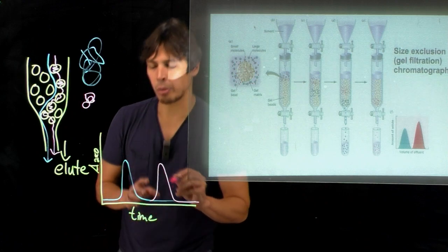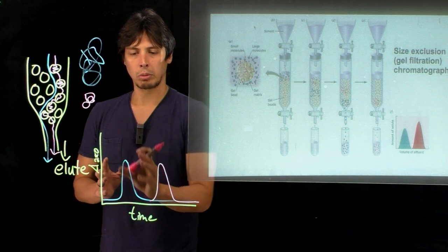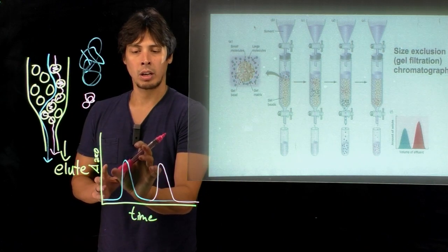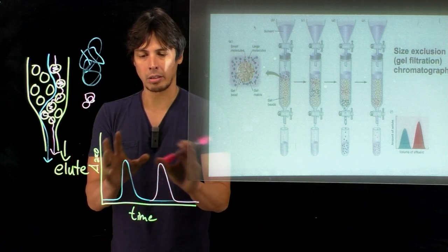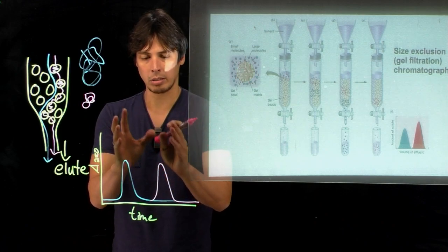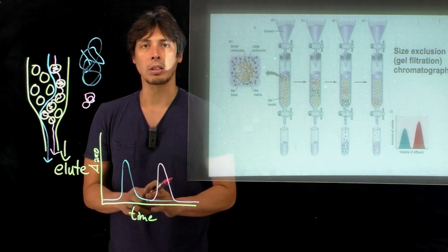So it will take more time for this protein to elute. Your chromatogram might look something like this, where the blue protein elutes first and then the red protein second. As you can see, this allows for separation of these two proteins by mass.